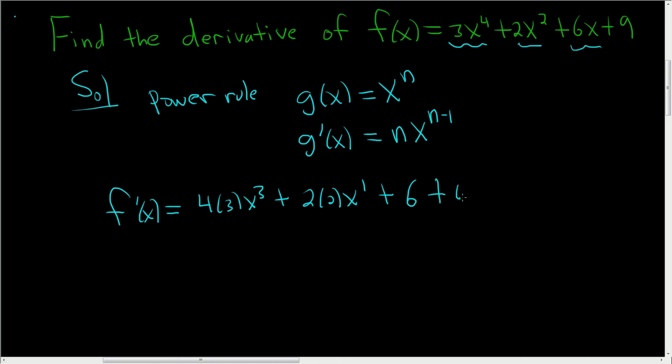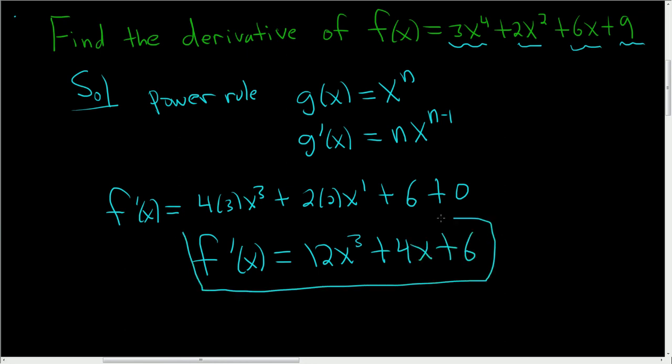Plus 0. Again, the line y = 9 is a horizontal line with slope 0. Derivative is slope. Finally, the derivative ends up being 12x^3 + 4x + 6. And that's how you use the power rule.